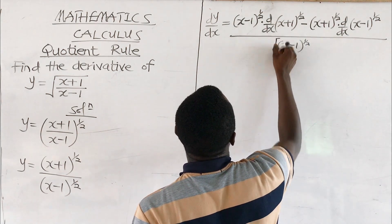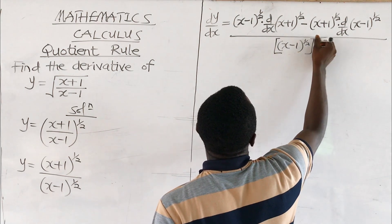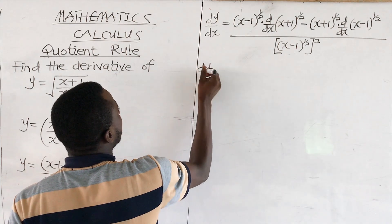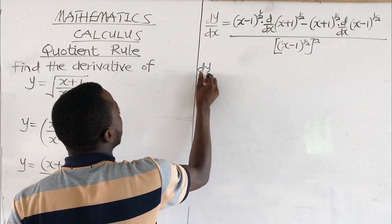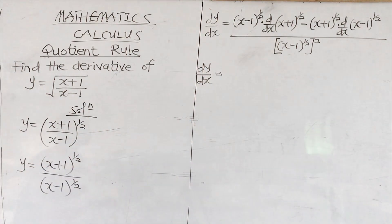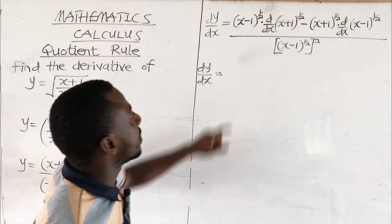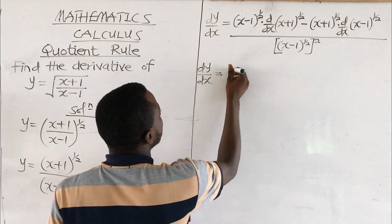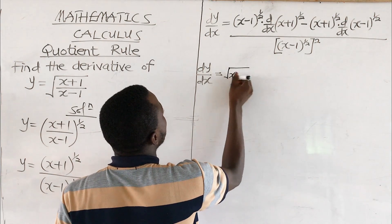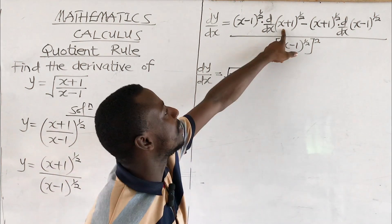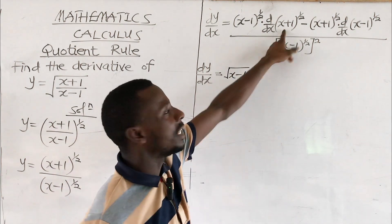All over the denominator squared — so (x minus 1) to the power half, squared. Note that (x minus 1) to the power half is the same as root of (x minus 1).